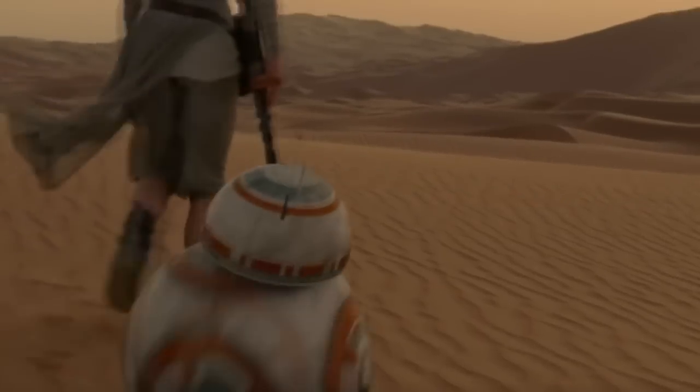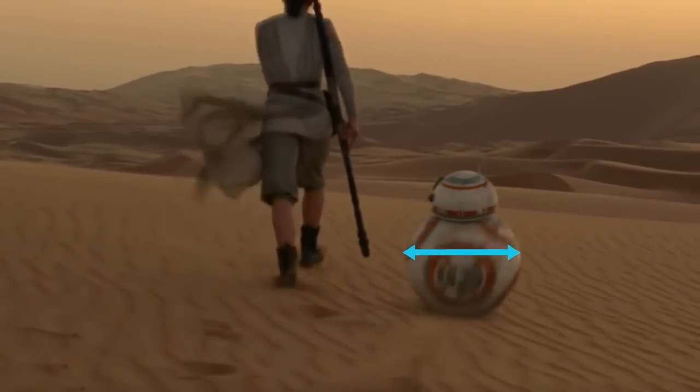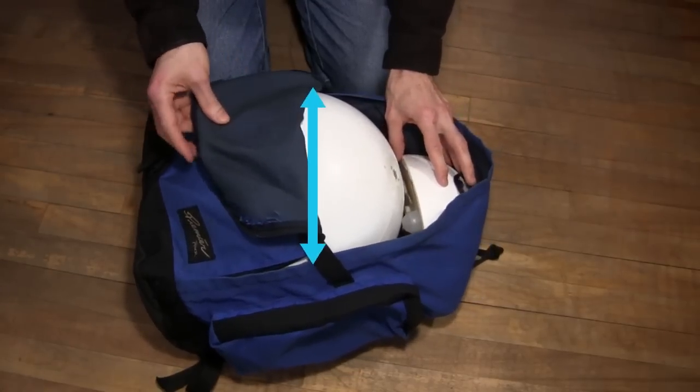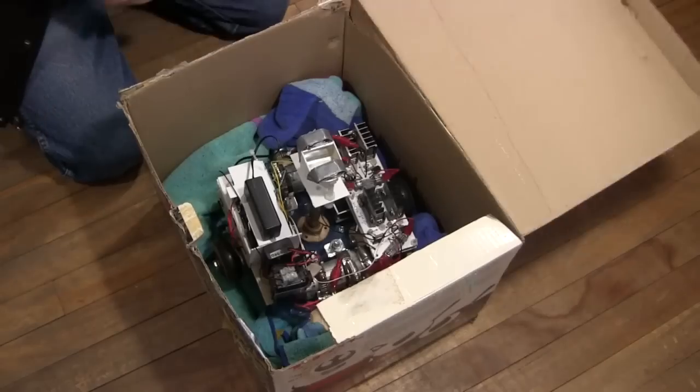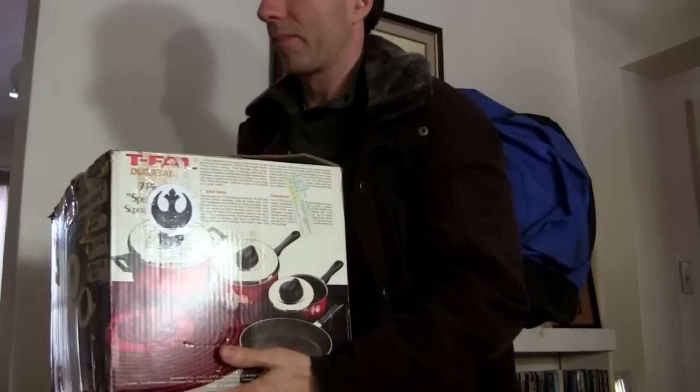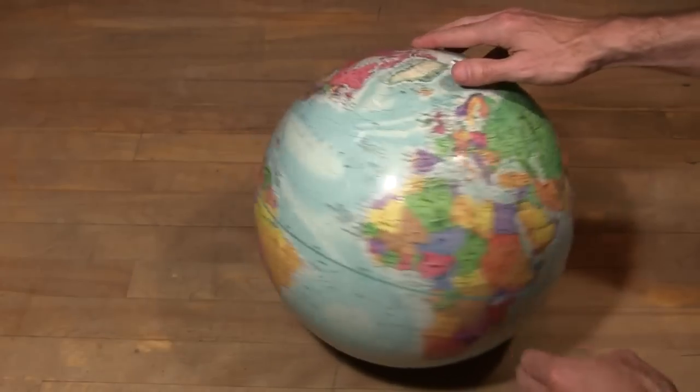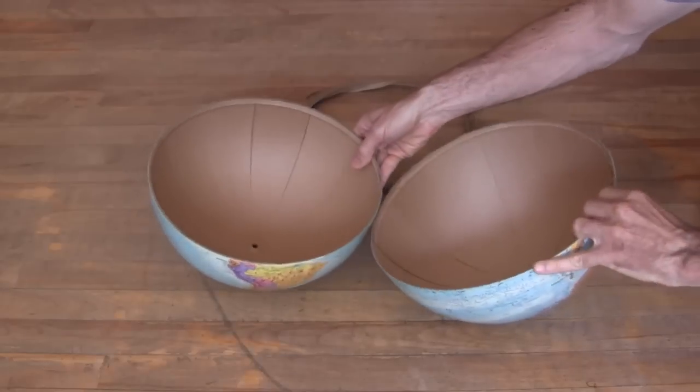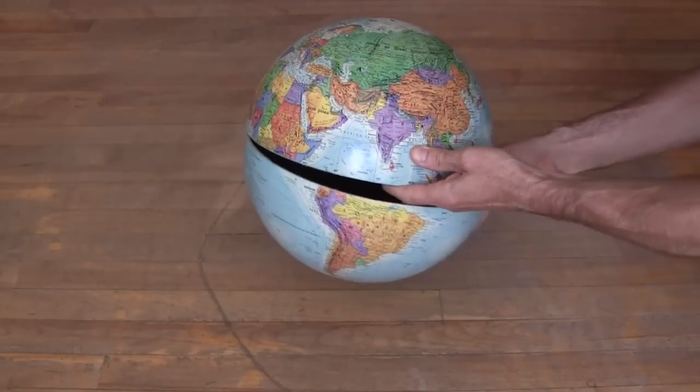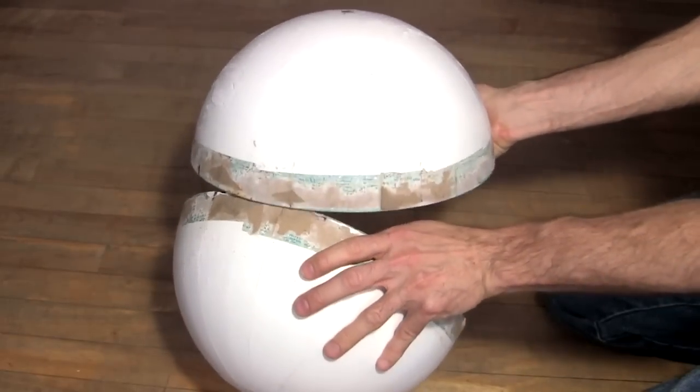The BB-8 in the movie has a 20 inch or 50 cm ball. Mine is 12 inches or 30 cm and fits in a backpack, while the drive system goes in a box. The first thing I searched for is the ball and ended up buying a cardboard globe second hand, and had done just some test painting so far.